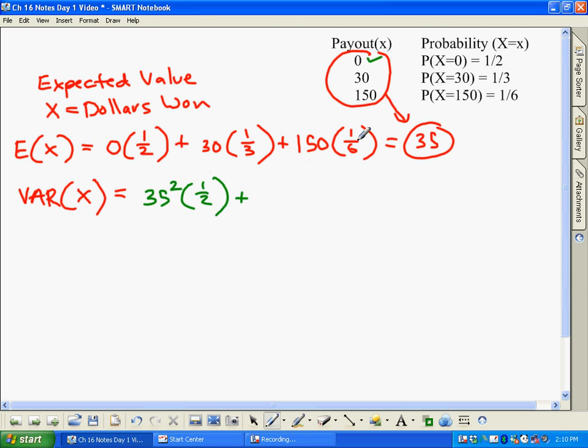Then we do that again between the next payout. What's the difference between 30 and 35? Well the difference between 35 and 30 is 5, squared, multiplied by its probability, which is 1/3.